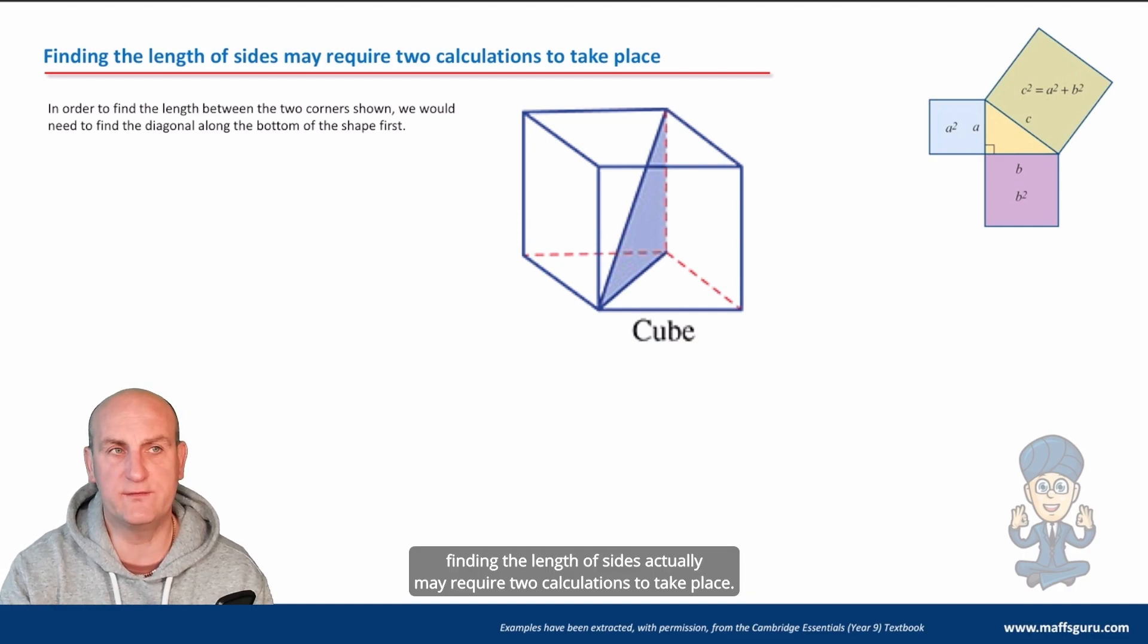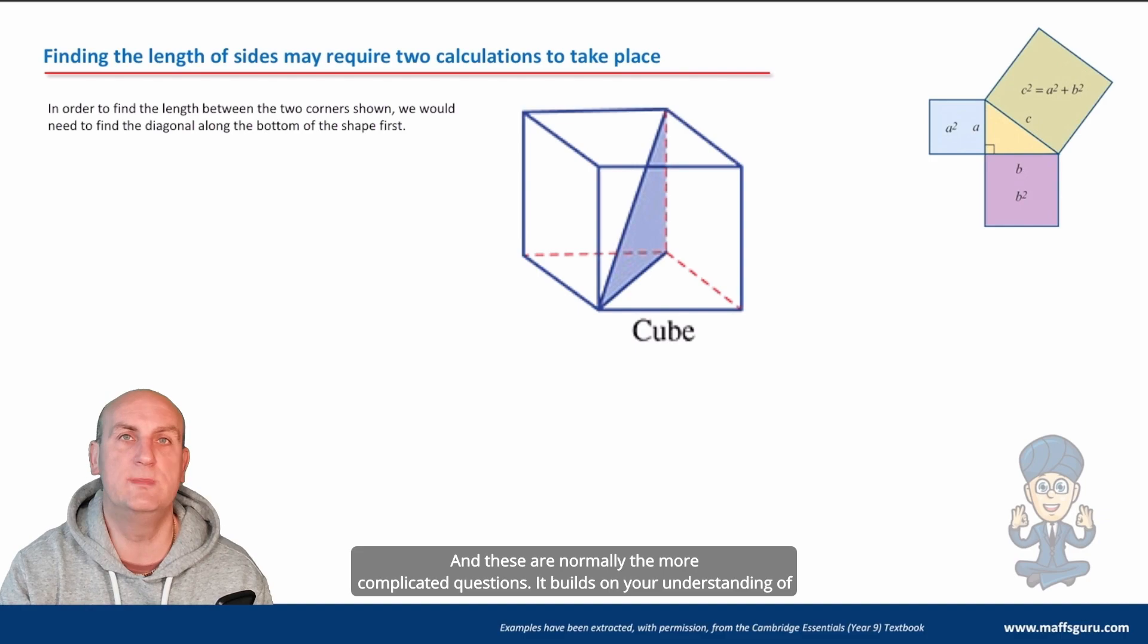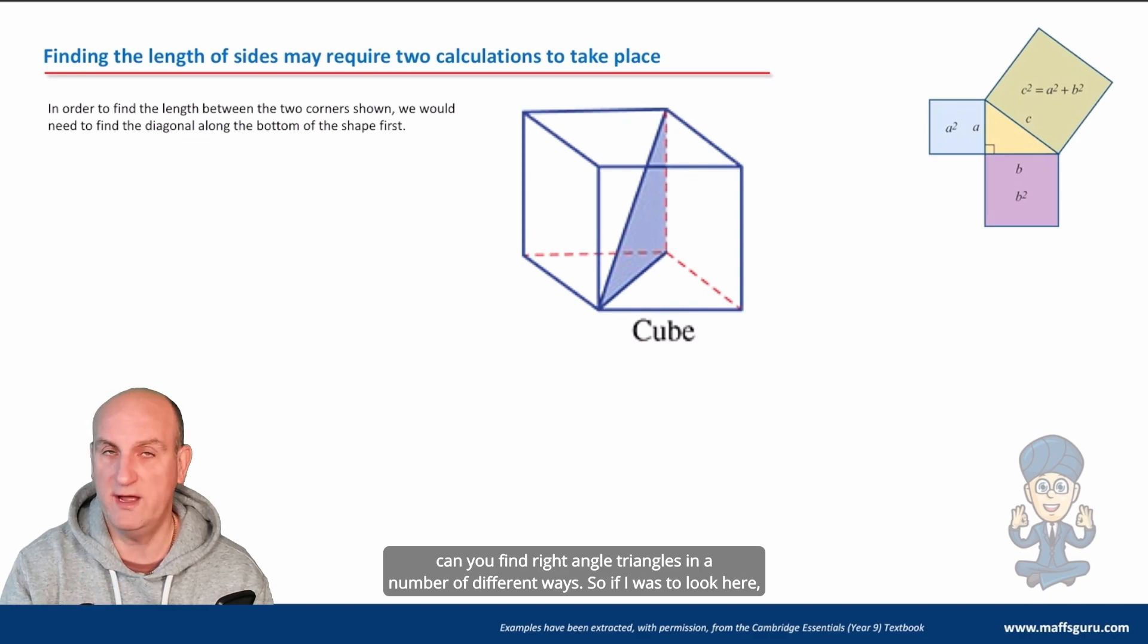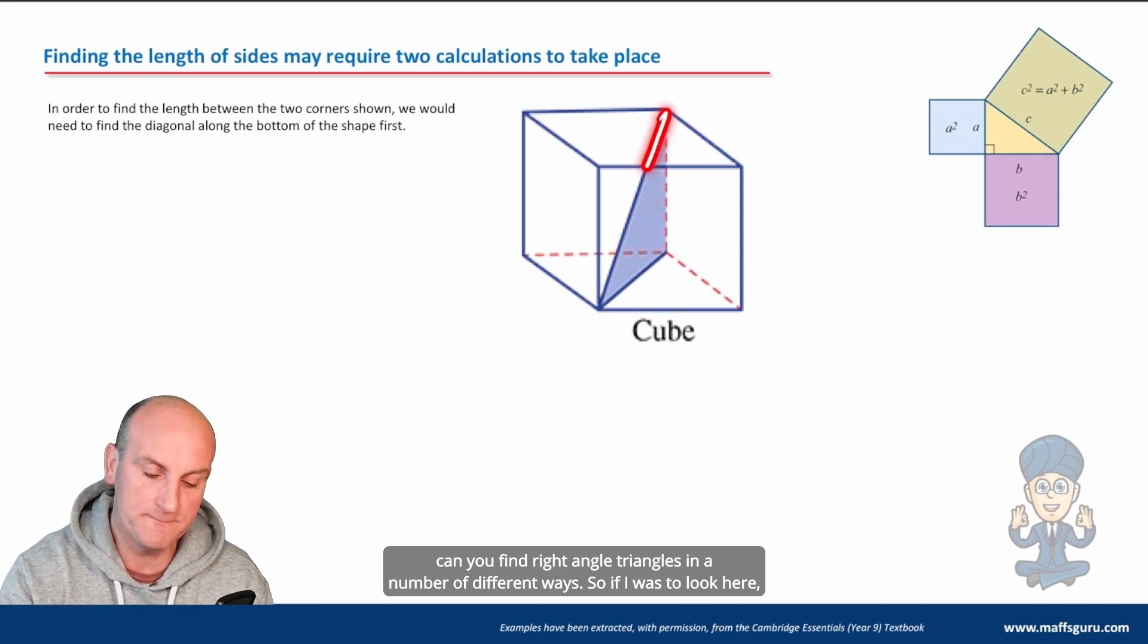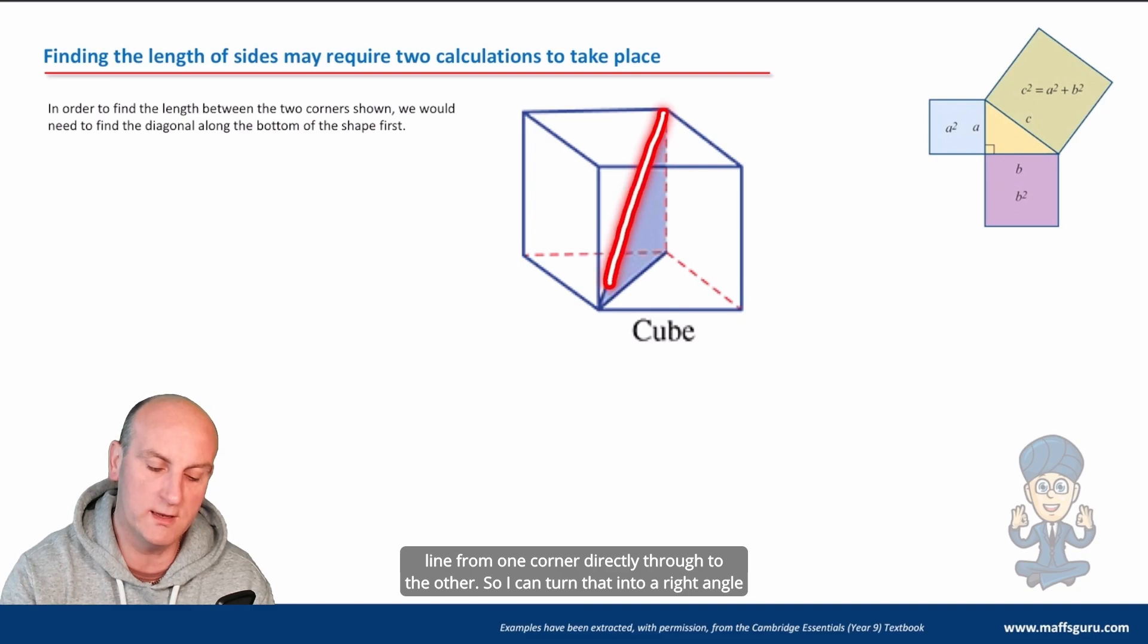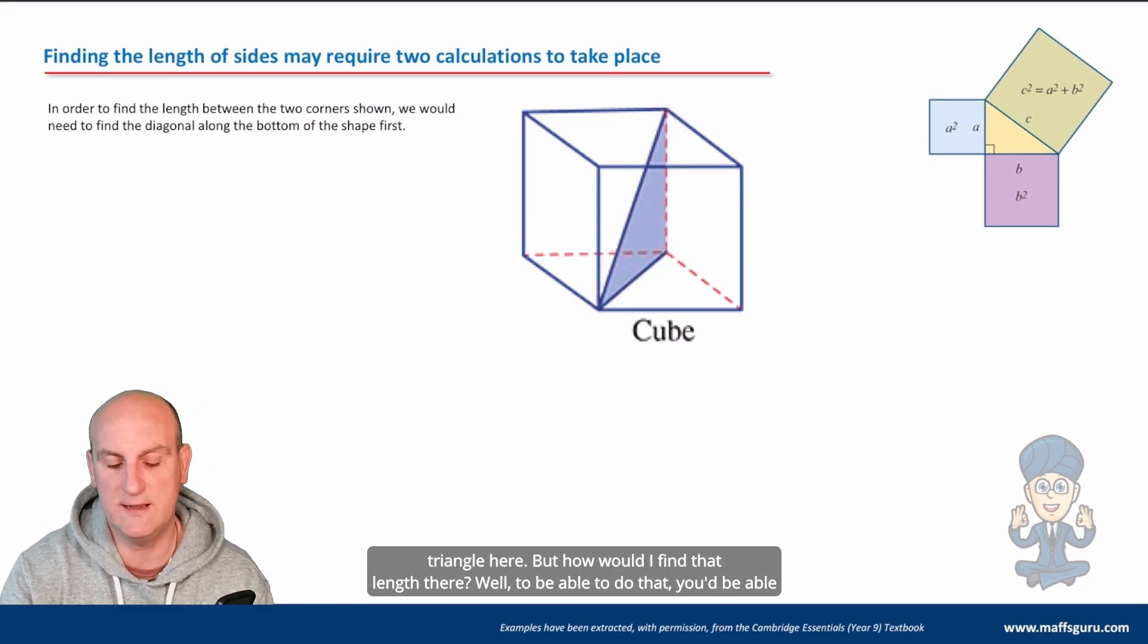Now finding the length of sides actually may require two calculations to take place and these are normally the more complicated questions. It builds on your understanding of can you find right angle triangles in a number of different ways. So if I was to look here you would probably turn around and say well yes there is a right angle triangle I've got a slanted line from one corner directly through to the other so I can turn that into a right angle triangle here.